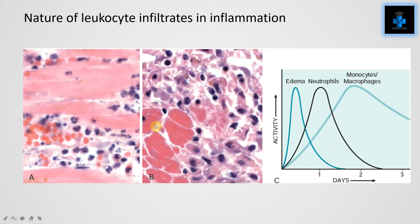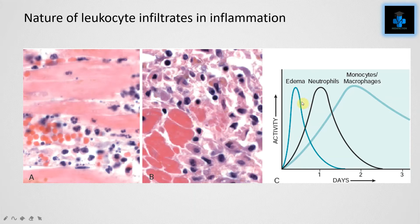Next is the nature of leukocyte infiltrates in inflammation. This varies in acute and chronic conditions. In picture A we can appreciate the recruitment of neutrophils to the site of injury. If the offending agent is not removed, this is followed by lymphocytes, which can be appreciated in picture B. The injury leads to edema, neutrophils, and then monocytes and macrophages at the site of injury.